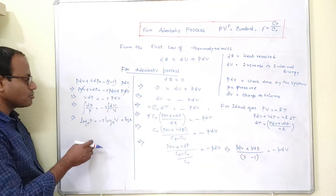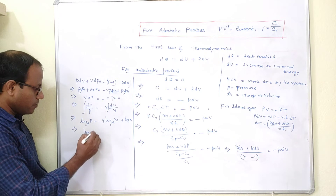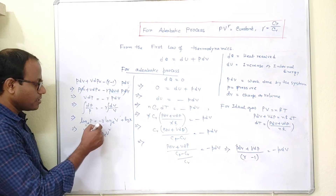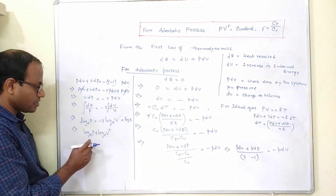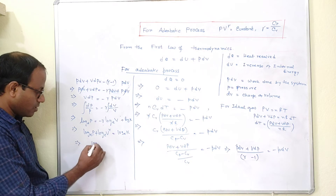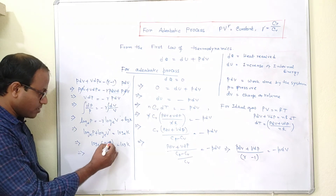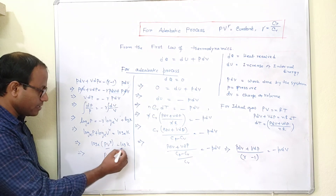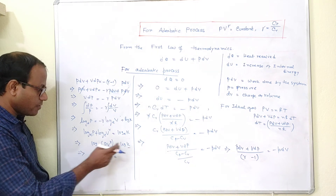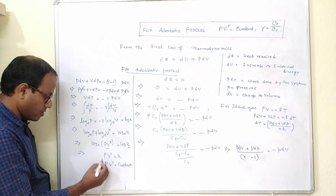Integrating both sides, log P equals minus gamma log V plus a constant. This gives log P plus gamma log V equals constant, which using log rules becomes log PV to the power gamma equals log of a constant. Therefore PV to the power gamma equals constant — and that is our proof that PV to the power gamma is equal to constant for an adiabatic process.